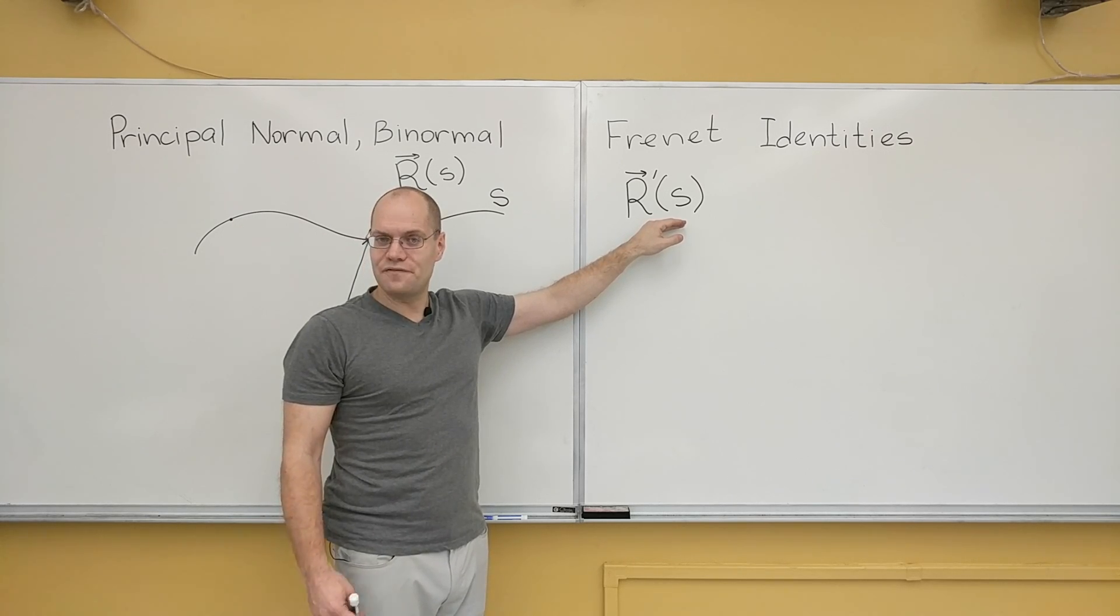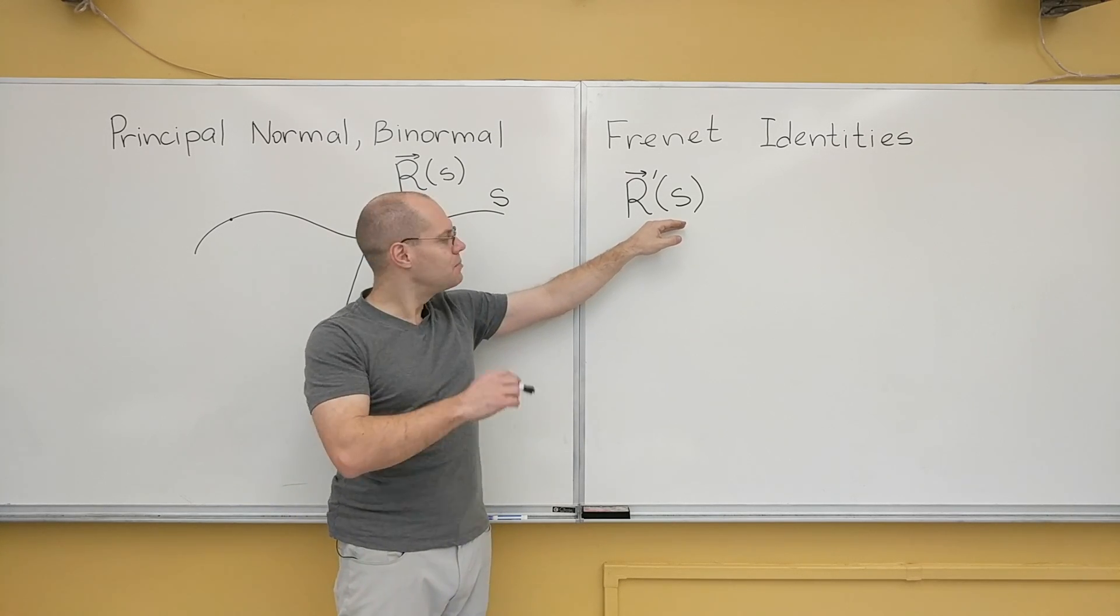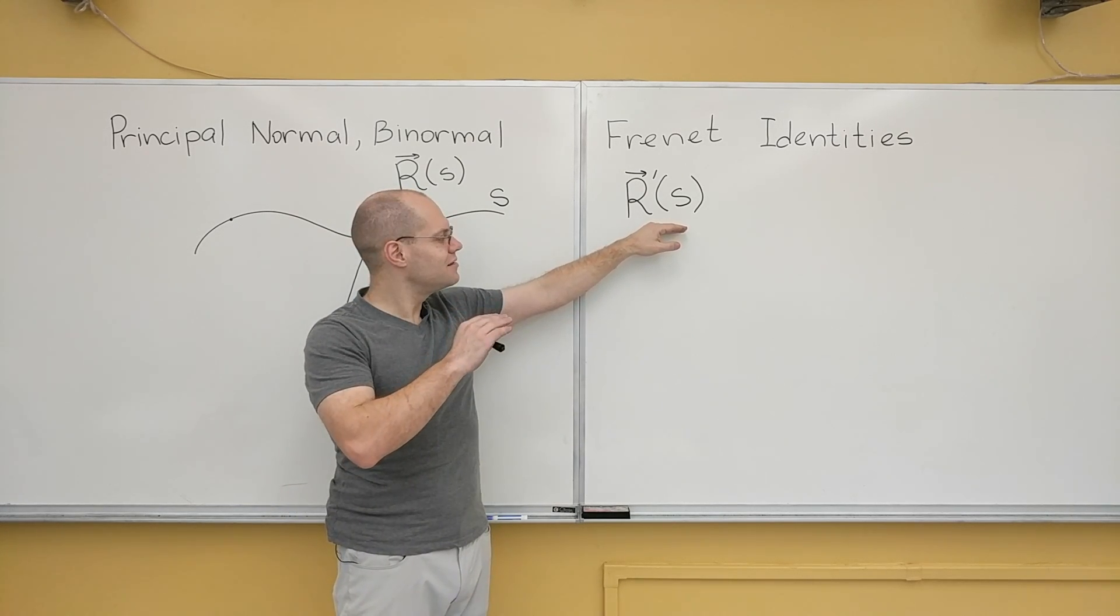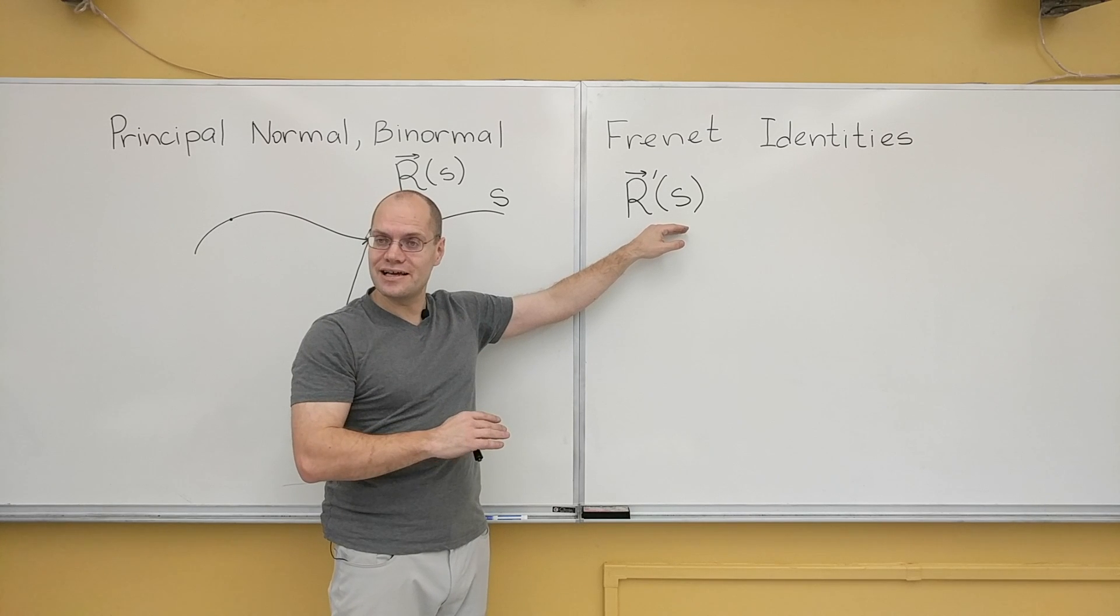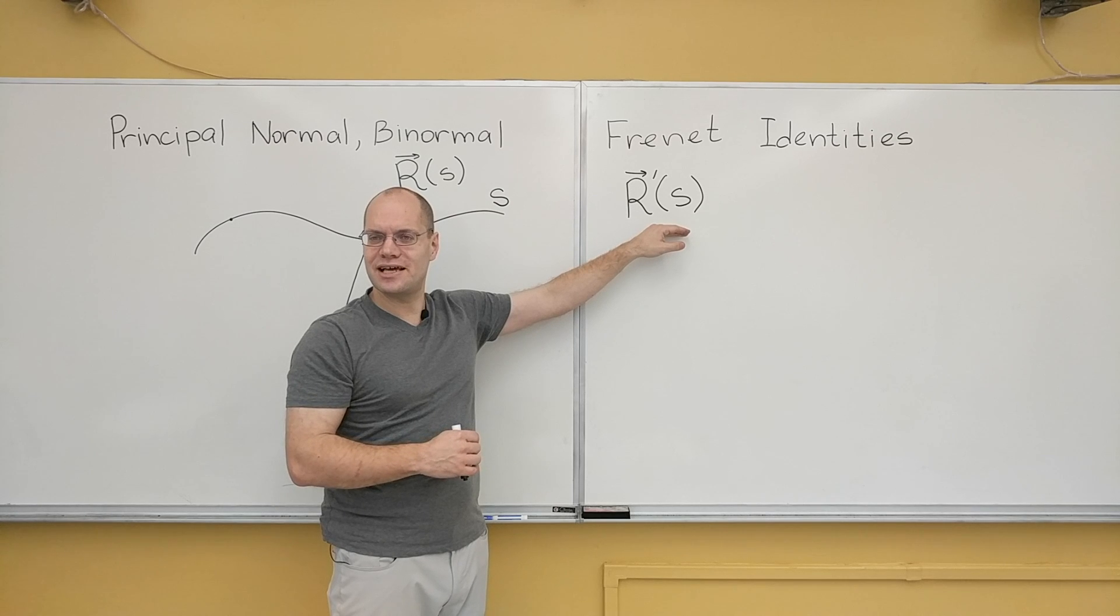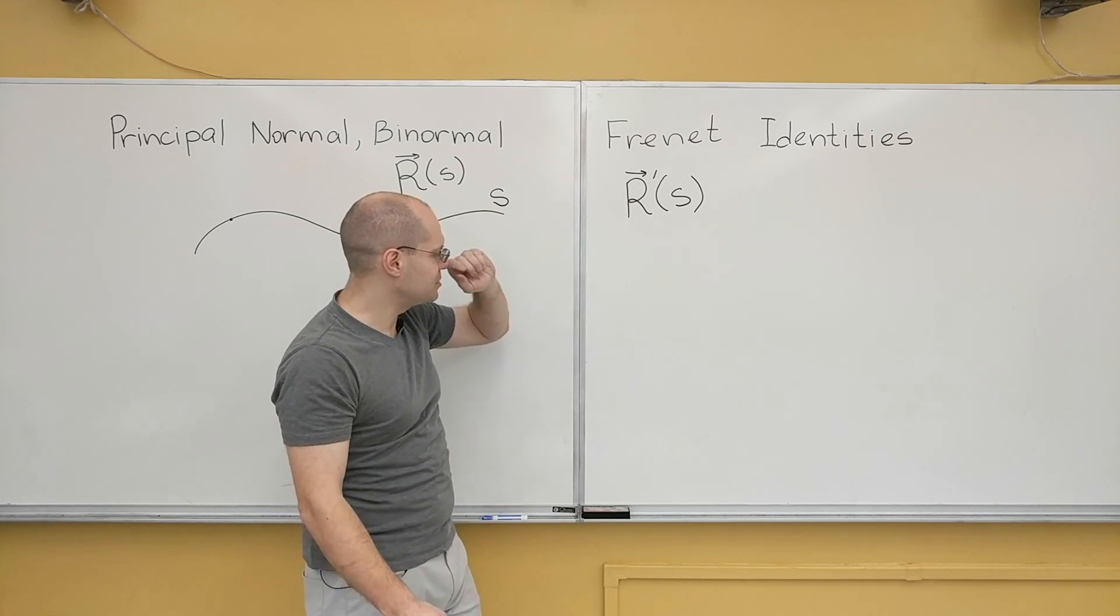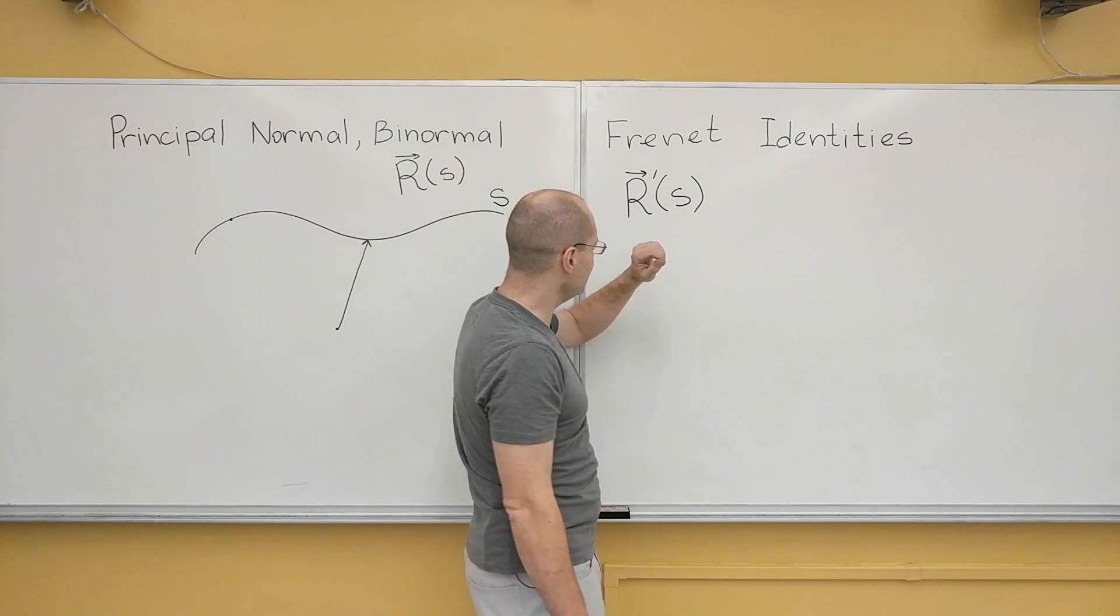Do you guys remember that? That if you use an arbitrary parameter alpha, you get an arbitrary tangent. But if you use the arc length, if you use arc length as your parameter, the resulting tangent is the unit tangent. I haven't put that video online yet but I will soon. I promise. Over the weekend.